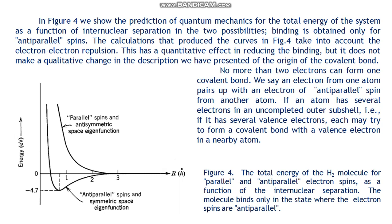For example, in nitrogen all three 2p electrons can have parallel spins because there are three possible values of the quantum number m_l for l = 1. As in ionic binding, the forces saturate in covalent binding; that is, a given atom strongly interacts with only a limited number of other atoms. Saturation is due to the limited number of electrons or vacancies in the outermost occupied subshell of the atom.